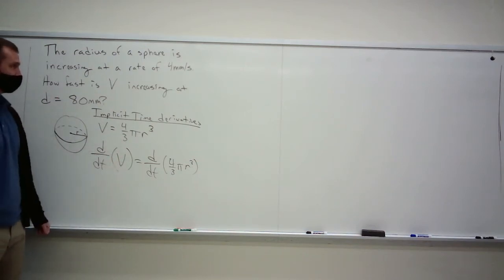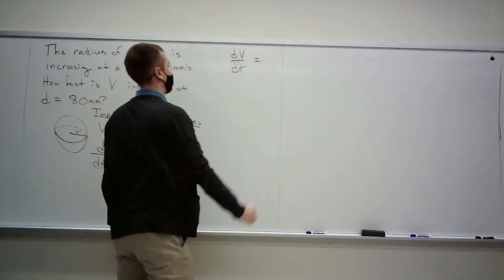We know for some given radius r, the volume of the sphere is exactly 4/3 πr³. But we know these things are changing. If the volume is increasing, the radius is increasing, the sphere is blowing up. So we need a way to get those rates built into the equation. The way to do that is implicit time derivatives. So we take d/dt of V, and that's going to be the same as d/dt of 4/3 πr³.